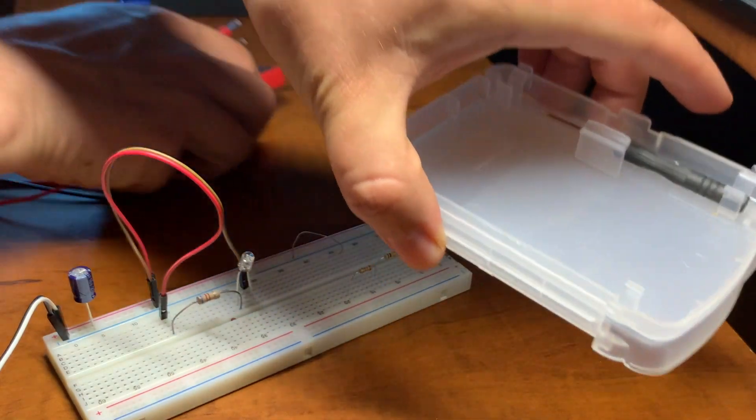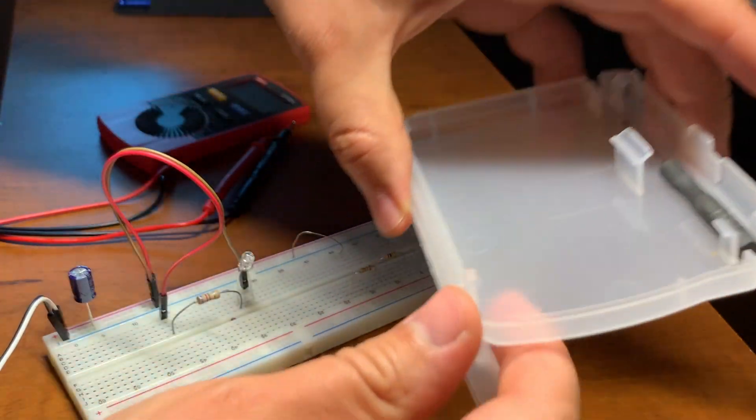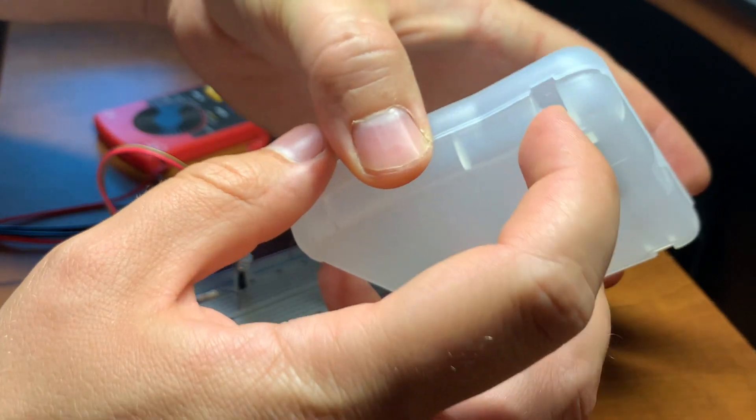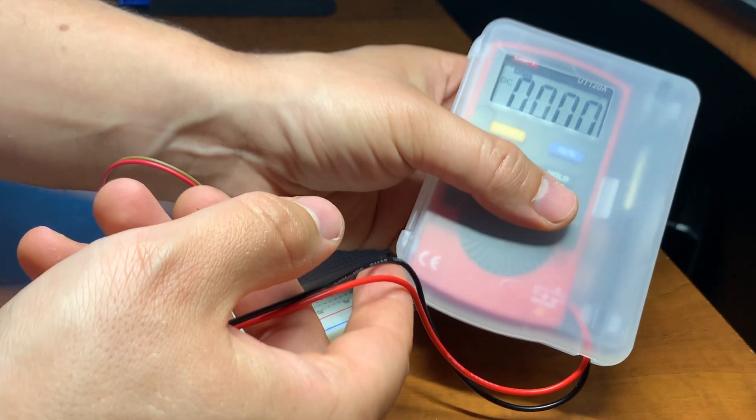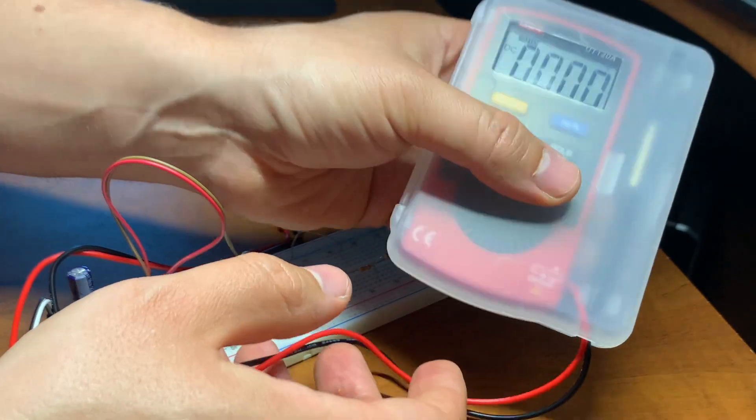The multimeter comes with this carrying case which is pretty handy. It has the holes for the probes if you want to use it closed. As you can see it's fairly visible whatever you want to measure.